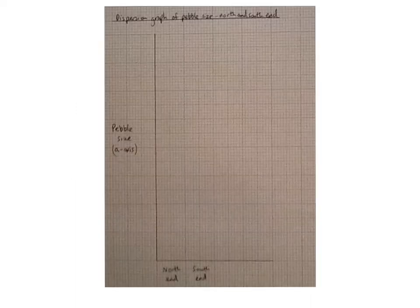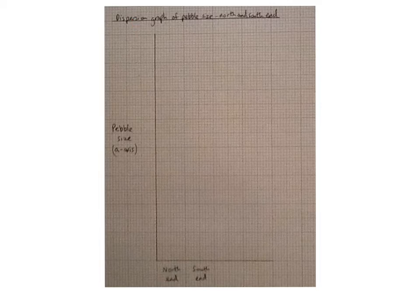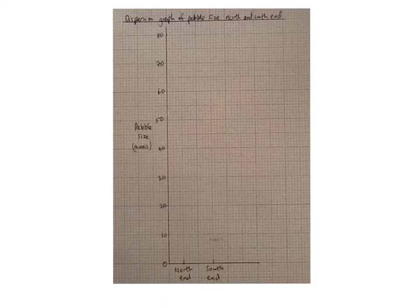The best way to plot your data is on a dispersion graph where you have on the y-axis the pebble size, your a-axis, and on the x-axis the north end of the beach and the south end. You then add your y-axis numbers from 0 up to probably about 81, I think was the highest one, and now you're ready to plot.